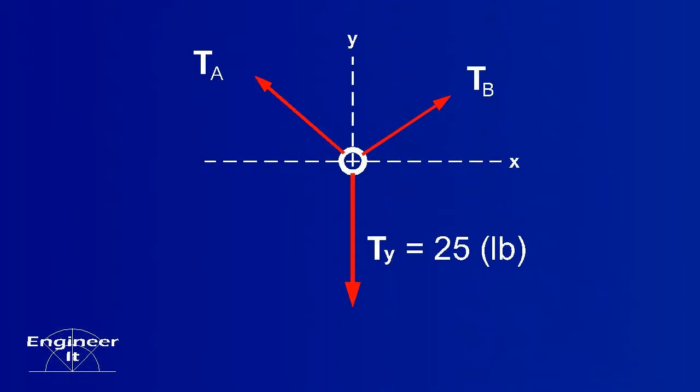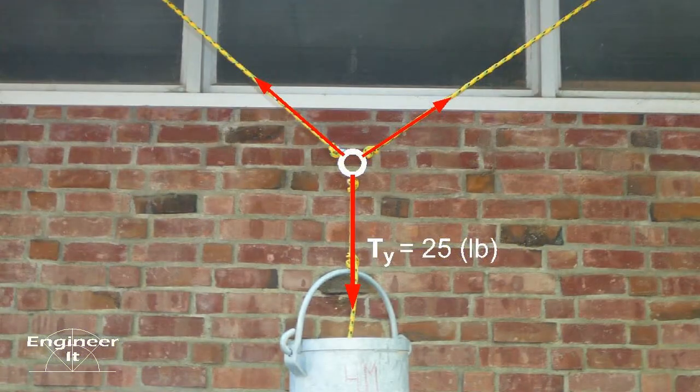Notice the tensions TA and TB are at an angle. Right now you may be asking yourself, how am I going to solve this? Don't give up just yet. There are three methods to solving these types of problems.